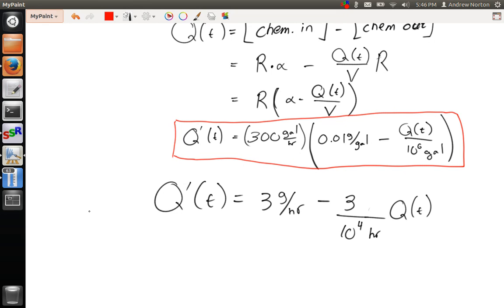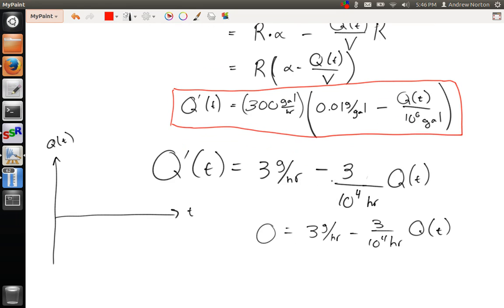So if we draw a direction field for that, if we have a direction field where this is q of t here, and this is t axis, q prime of t is equal to 0. 0 equals 3 grams per hour, minus 3 over 10 to the 4th. This is just the standard way that we're going to do drawing a direction field.